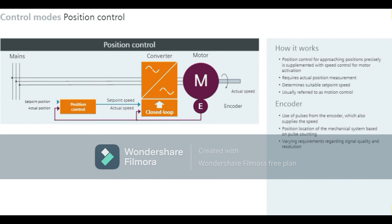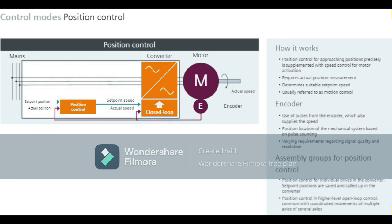Position control can be performed in the converter for individual drives, where all set point positions are saved and called up in the converter. The position is often controlled by a higher-level open-loop controller, usually when multiple axes need to perform coordinated movements. Typical higher-level open-loop control systems include the SIMATIC Technology CPU, SIMOTION Motion Control System, and the Numeric Machine Tool Control.